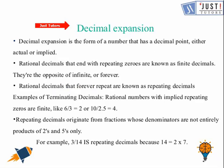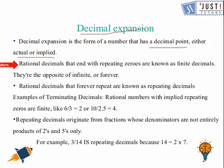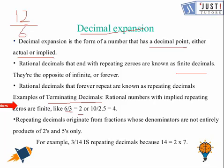First of all, let us see what decimal expansion is. Decimal expansion is the form of a number that has a decimal point, either actual or implied. A rational decimal that ends with repeating zeros or none is a finite decimal. For example, 6 over 3 equals 2, or 12 over 6 — its terminating decimal expansion is 2.